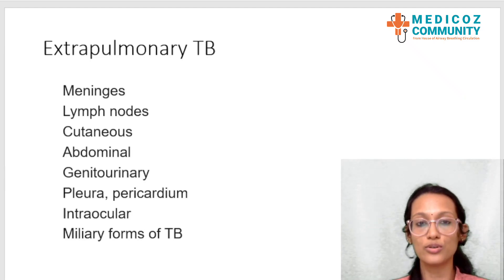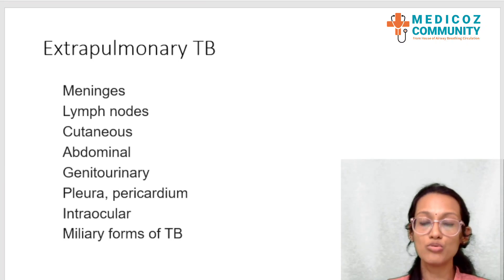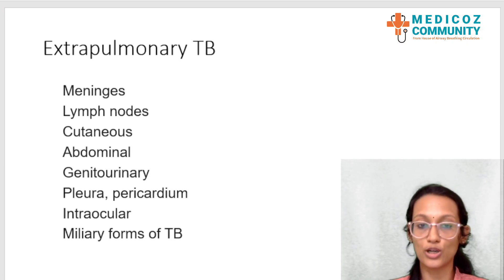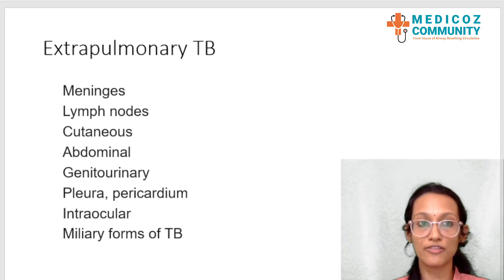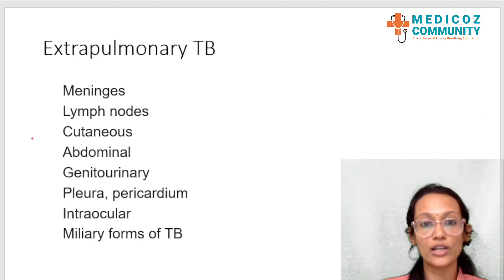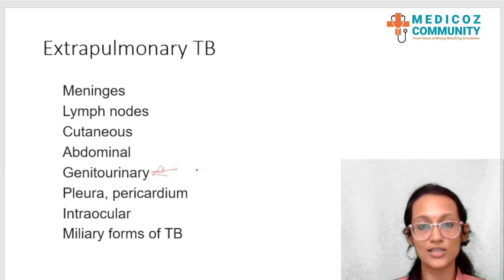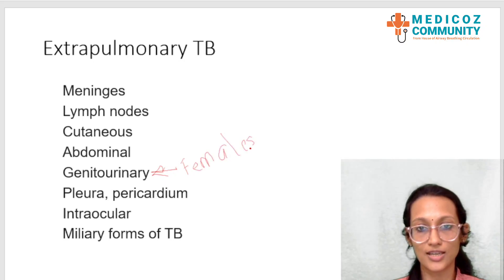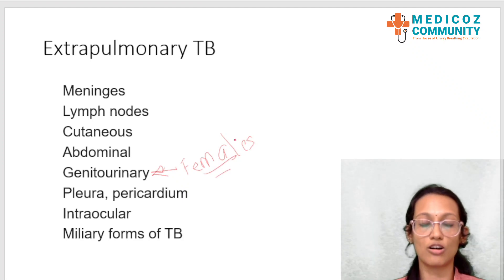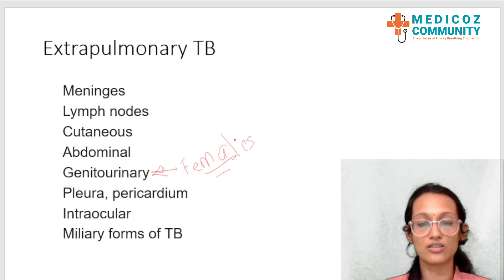First, extrapulmonary tuberculosis. When tuberculosis affects organs other than the lungs, it is called extrapulmonary. The usual organs affected are the meninges, lymph nodes, cutaneous tuberculosis, abdominal tuberculosis, genitourinary, pleura or pericardium, intraocular TB, and miliary forms of TB. Genitourinary TB is nowadays becoming very common, especially among females, as it is becoming a common cause of infertility. This is a hotspot area where exam questions can be asked repeatedly.